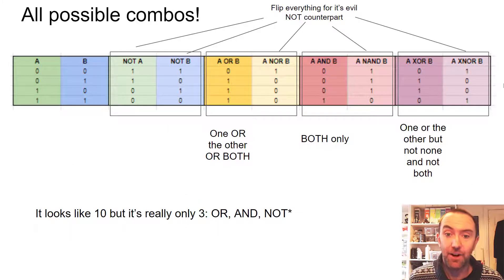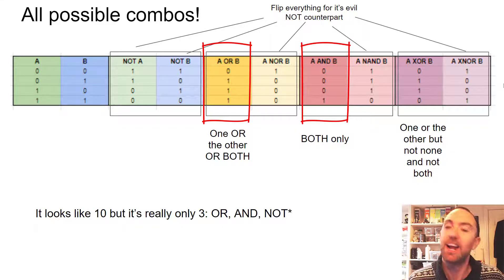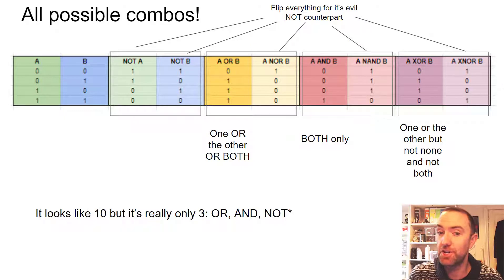Here's all of the combinations of the truth tables that you need to know. But the good news is this is actually only two. It's only two. There's only AND and OR, everything else is sort of just a derivative. It's either the flipped NOT version of it or the exclusive exception.